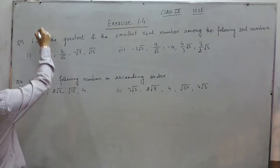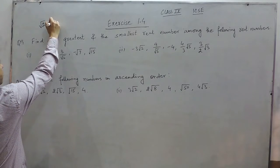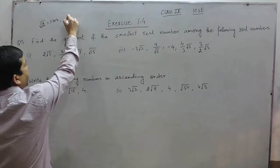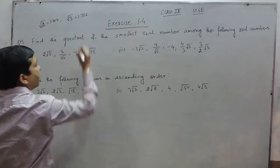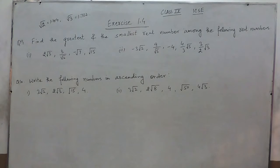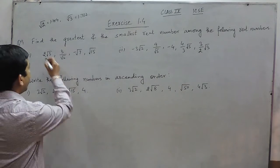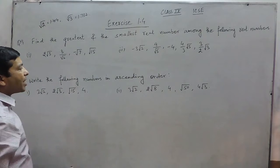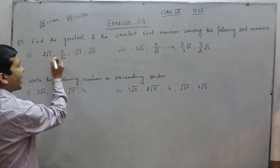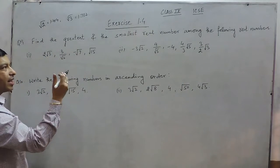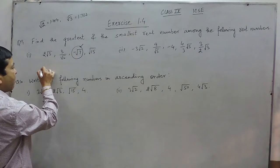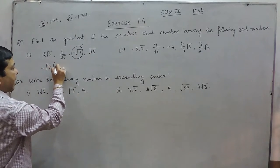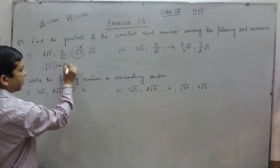We know that the value of under root 2 is 1.414 and the value of under root 3 is 1.73. We can also talk about the approximate value of any under root. When we talk about the smallest real number, we know that a negative number is always less than a positive number. It is the only number which is negative, so definitely minus under root 7 is the smallest real number.